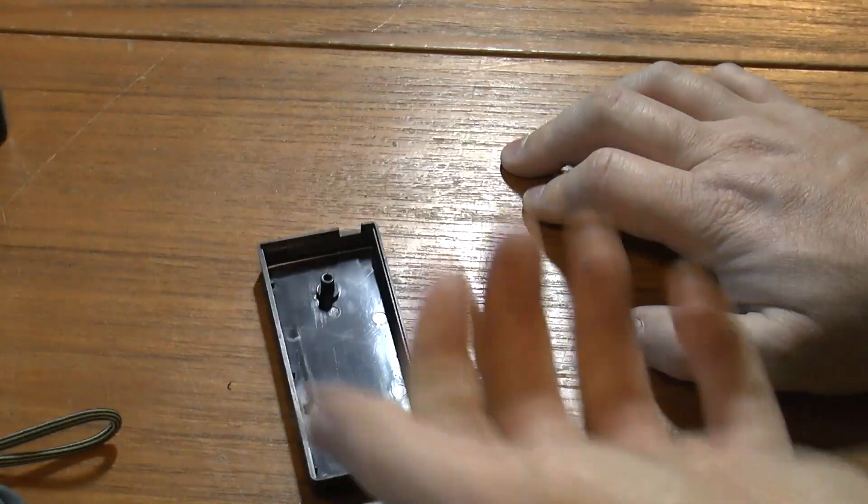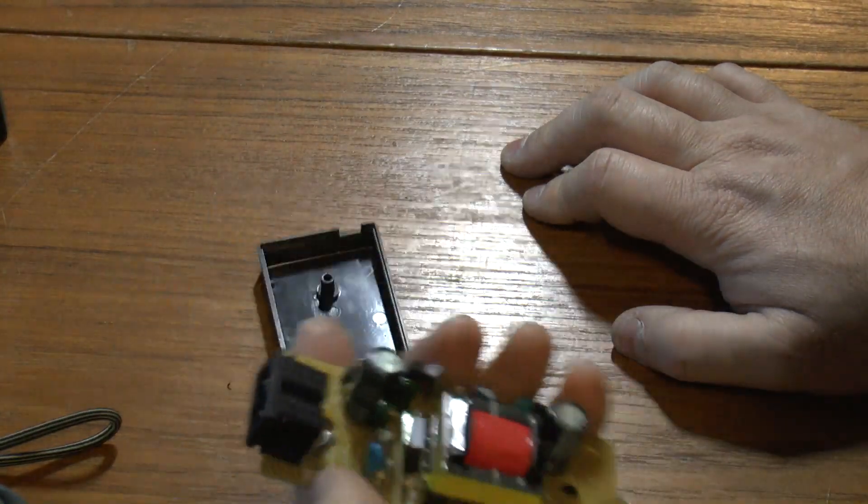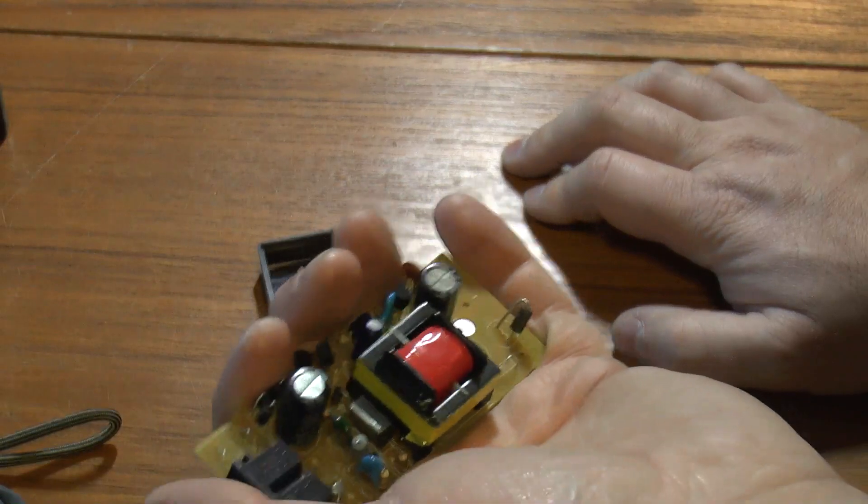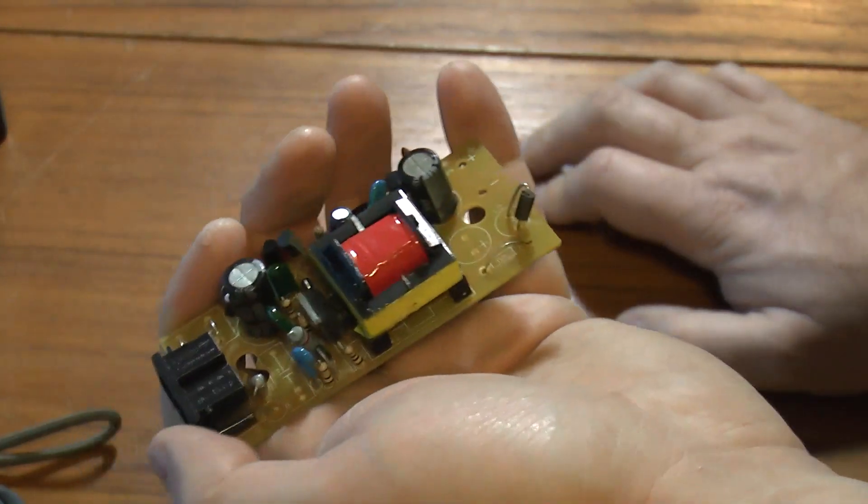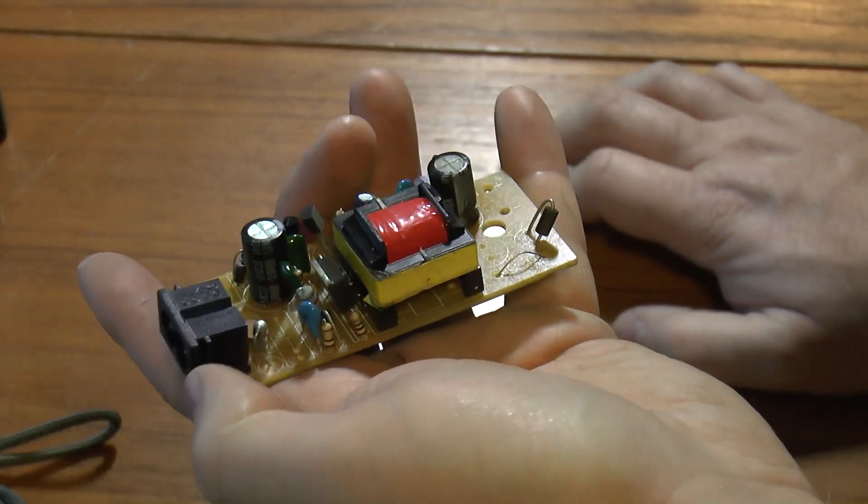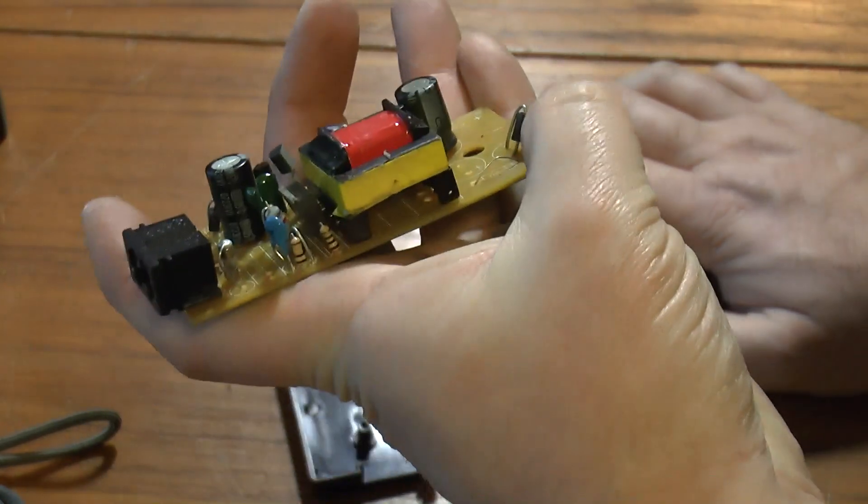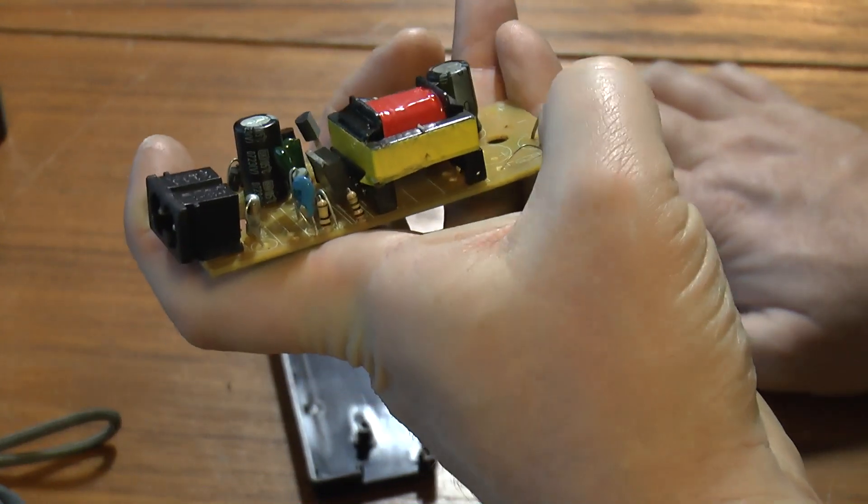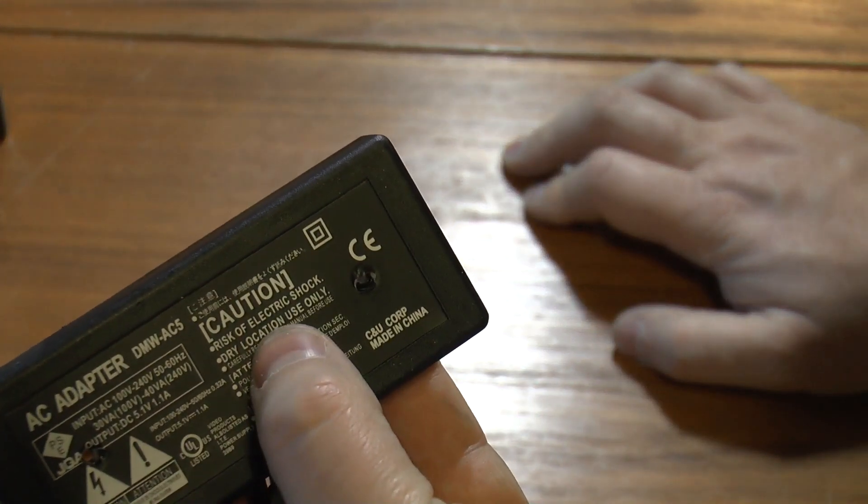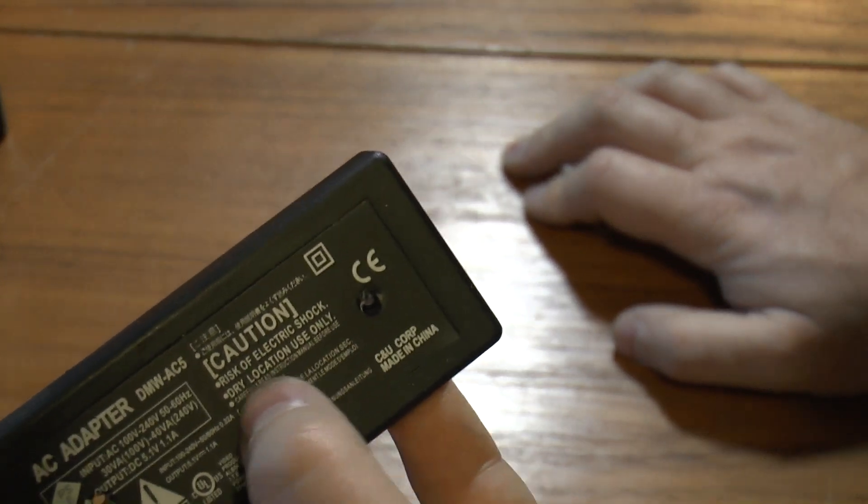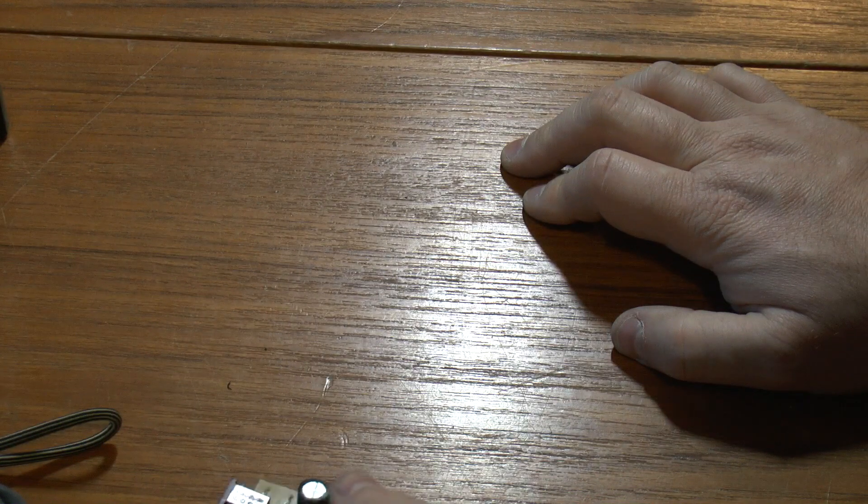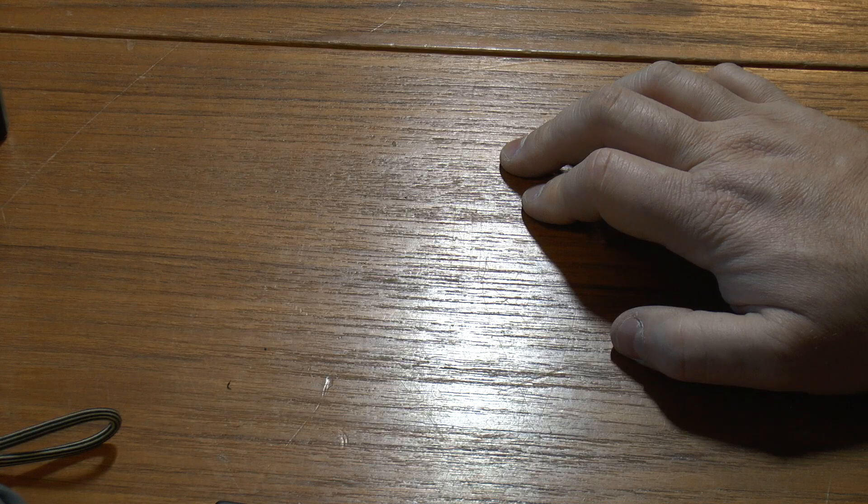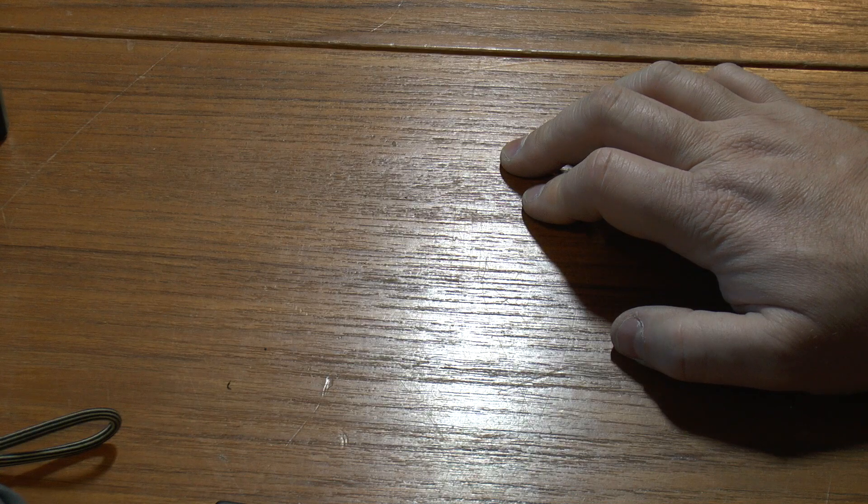But if you're thinking about buying one of these cheap power supplies, I'd think again because you certainly wouldn't want to leave one of these unattended. I don't think there's much of a risk of electric shock from the secondary output. But to be fair, it does say on the back, risk of electric shock. I don't think that's what they meant by putting that disclaimer on the back of the case. But I don't think that should be on sale in the UK. So I'll be passing that on to trading standards to take a look at.